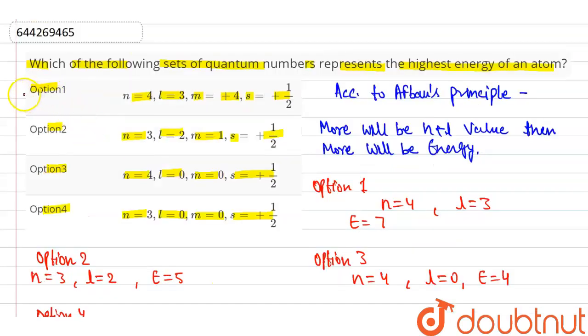So our first option is correct option. Here, n plus l value is more, that is 7, so more will be energy. Thank you.